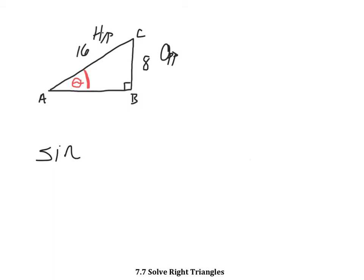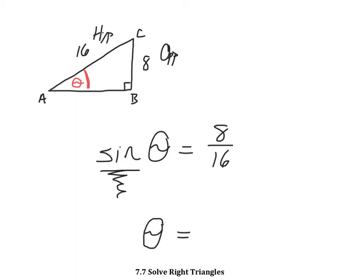I know that the sine of theta is equal to opposite over hypotenuse. So now the question becomes, how do I get that theta by itself? How do I figure out what that angle measure is equal to? So in other words, how do I get rid of this sine right here?